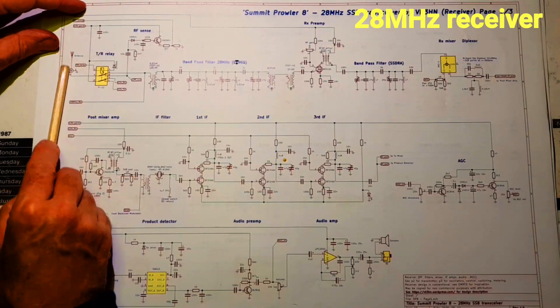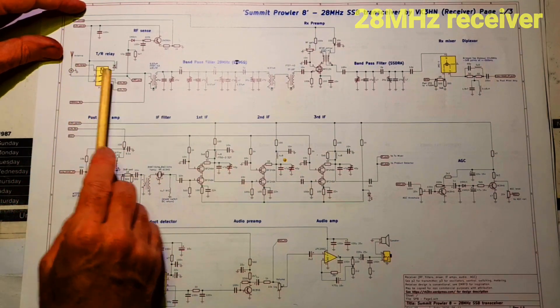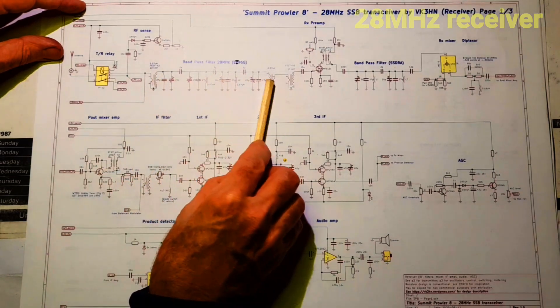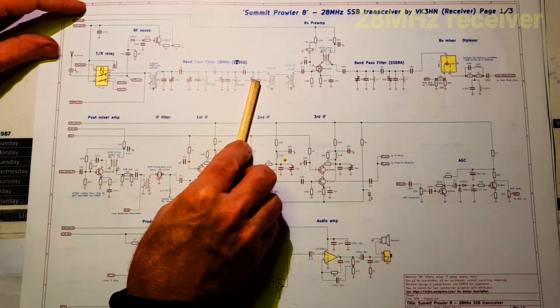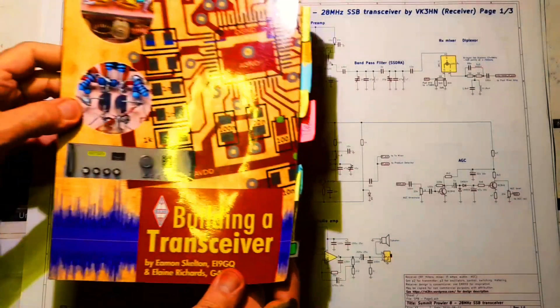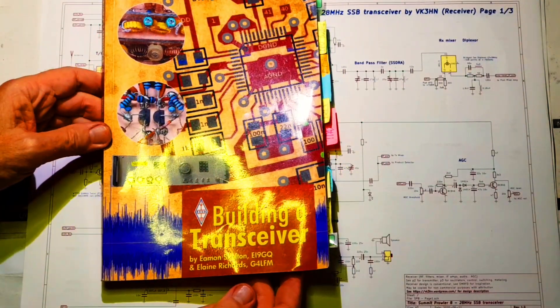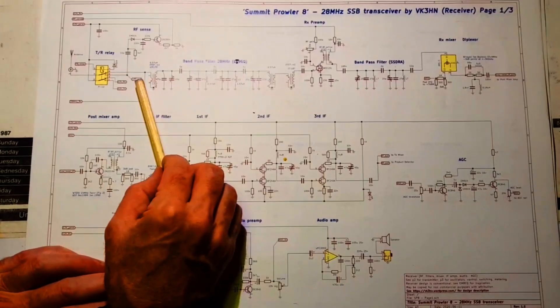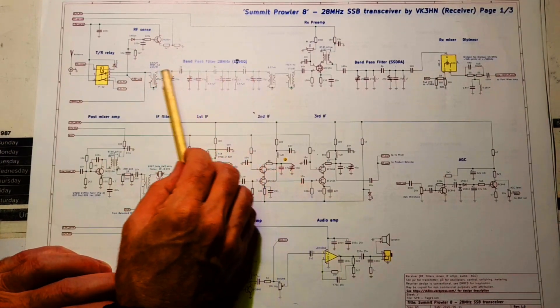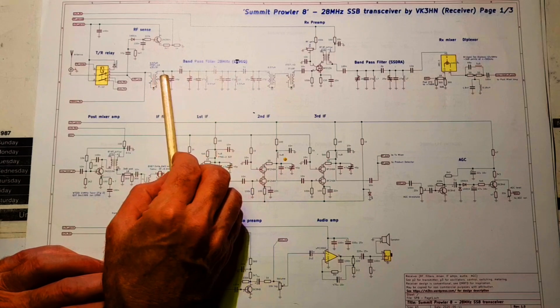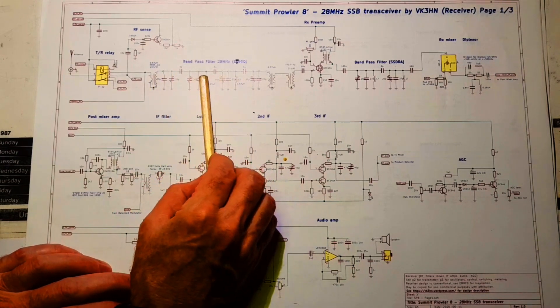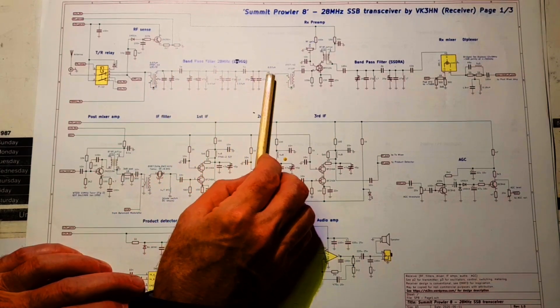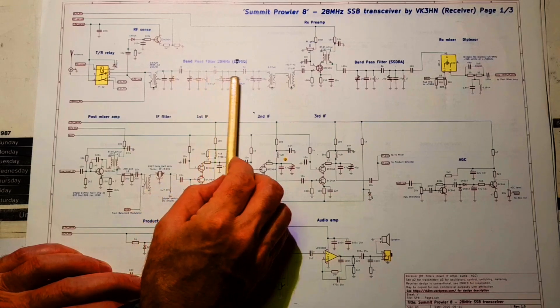28MHz from the antenna comes in through a TR relay and then into this long bandpass filter. This is from EI9GQ. That's our friend Eamon who is responsible for this excellent book. This is a bandpass filter that I've used quite a few times now.